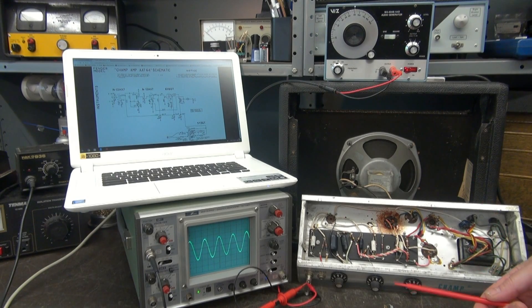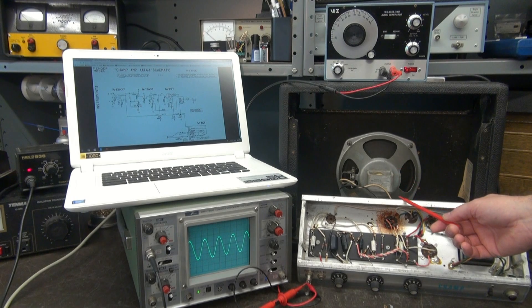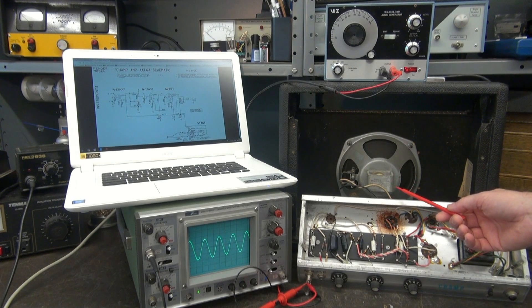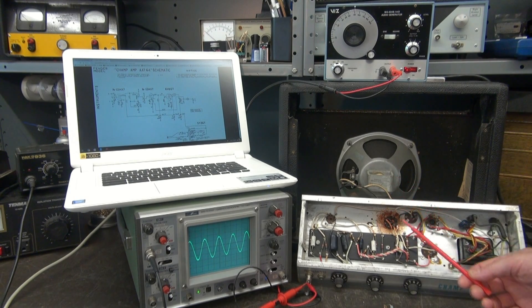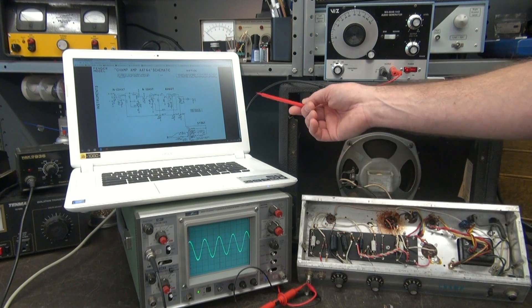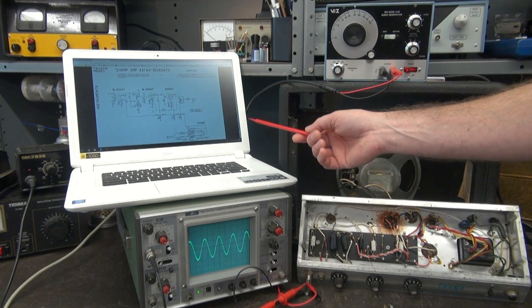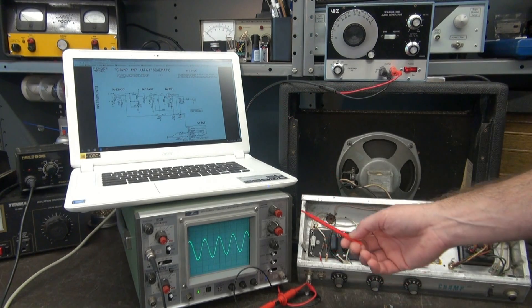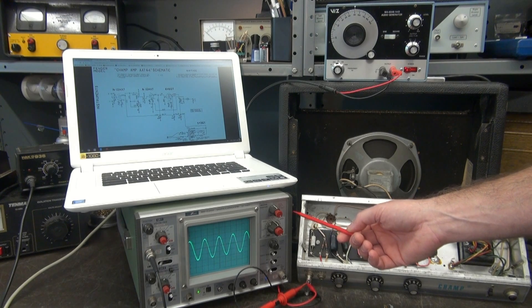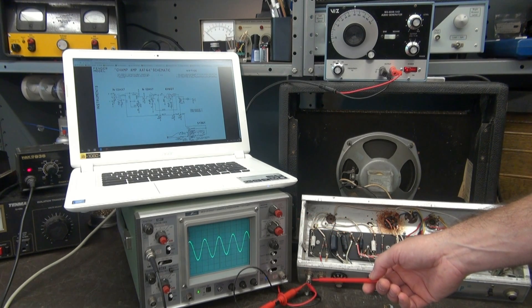So here is the test setup. Obviously, you've got the amp that you're going to check. In this case, it's a Fender Champ model AA-764. Got the schematic up here on the screen, which is free on the web. Got a basic 20 megahertz oscilloscope here set up. Right now, we're just looking at the input.